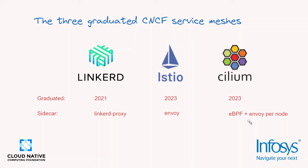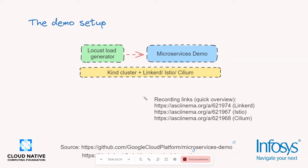As soon as Cilium graduated, I wanted to create this talk — it is interesting to see how leading open source projects have taken different architectural decisions and the trade-offs involved. We've also created a very small demo for each of the service meshes running on a kind cluster. The microservices demo is the excellent project provided by Google Cloud, with load generated by Locust.